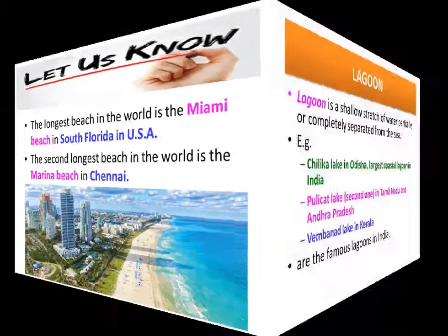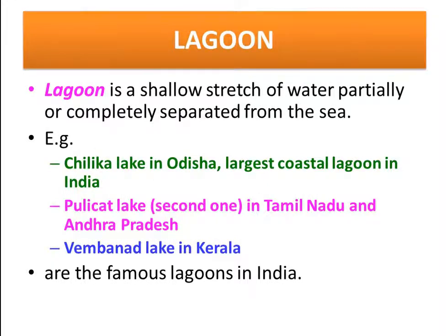Now we will learn about a lagoon — spelled L-A-G-O-O-N. A lagoon is a shallow stretch of water, partially or completely separated from the sea. Examples of lagoons in India are Chilika Lake in Odisha, which is the largest coastal lagoon in India; Pulikat Lake, the second largest, shared by Tamil Nadu and Andhra Pradesh; and the famous Vembanad Lake in Kerala, which is a freshwater lake, while the other two are salty.